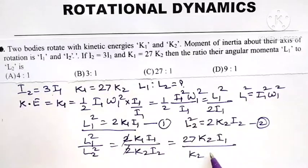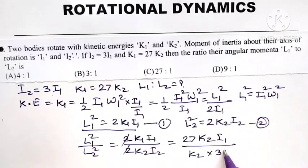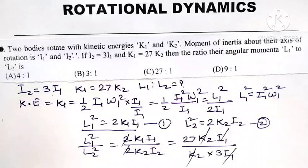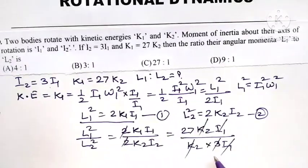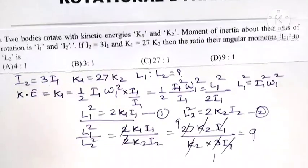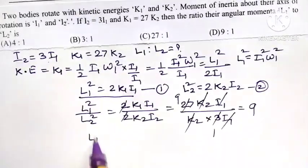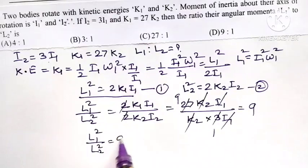I2 equals 3I1, so into 3I1. This I1 gets cancelled with I1, K2 gets cancelled with K2. 3 times 1 is 3, 3 times 9 is 27, so this is 9. L1 square upon L2 square equals 9.